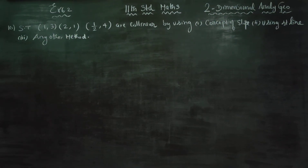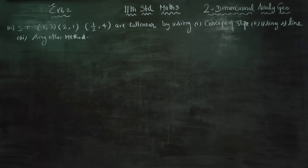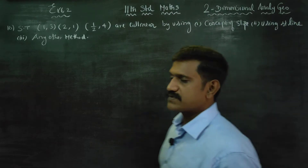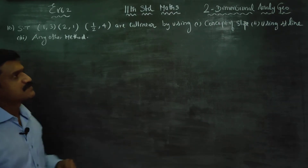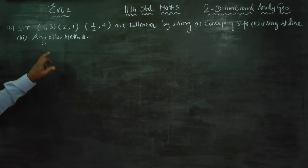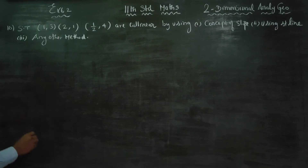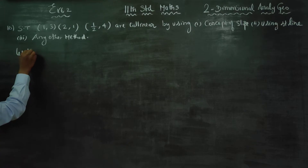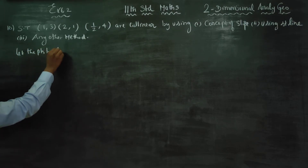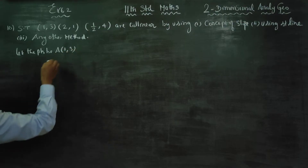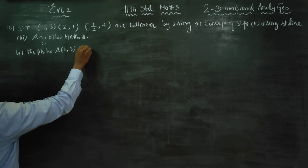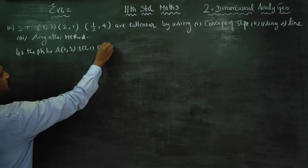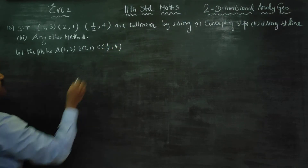Dear Levin Standard students, I am Etruk Karanagaran. In exercise number 6.2, sum number 10, show that the points are collinear by using the concept of slope, using straight line, or any other method. First we will start with the concept of slope. Let the points be A(1,3), B(2,1), and C(1/2, 4). Three points are written.